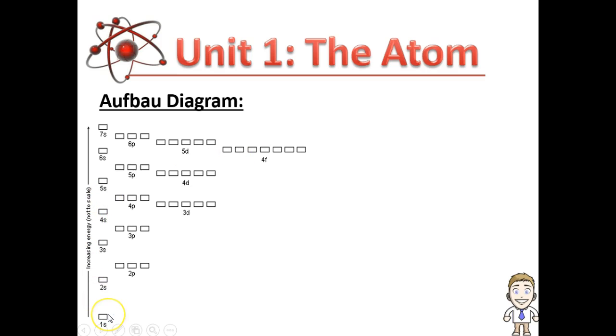So down at the bottom with the 1s orbital, that is the lowest energy level, also closest to the nucleus. As you move up to the 2s, 2p, 3s, the orbitals have higher and higher energy values and also get further away from the nucleus.